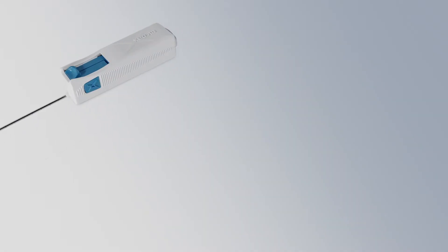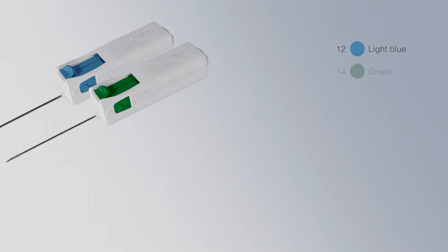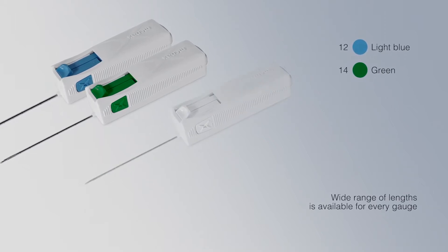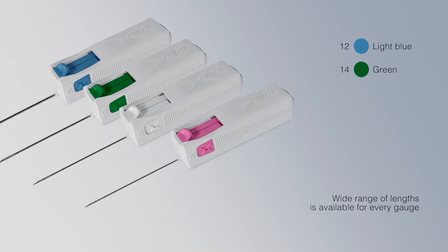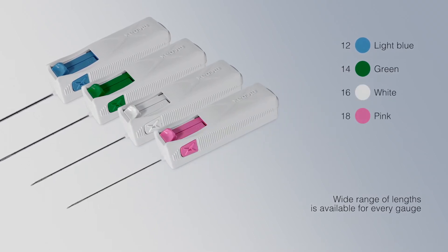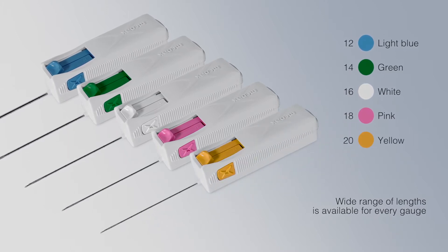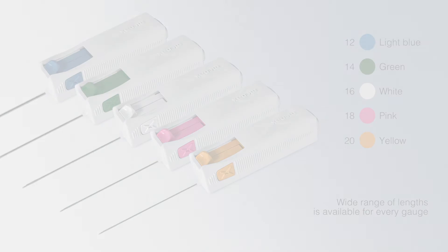MedOne is available in the 12-gauge and 14-gauge blue and green color code typically used in breast biopsy, 16-gauge and 18-gauge white and pink for liver, kidney and prostate biopsies, and 20-gauge yellow for microhistological biopsy.